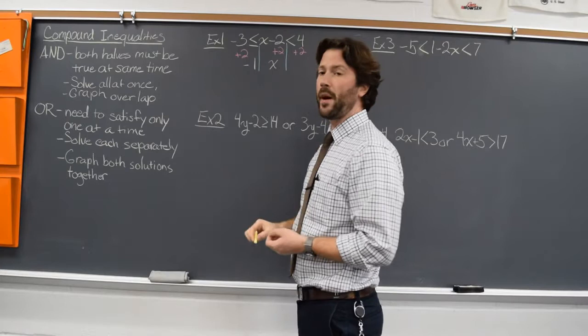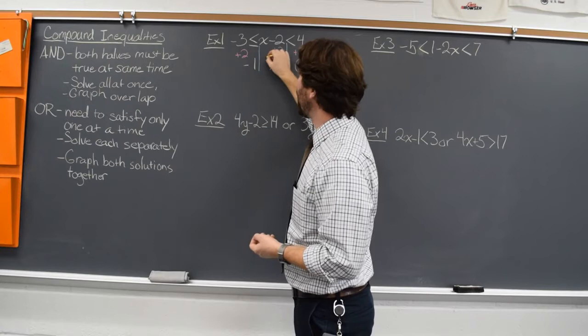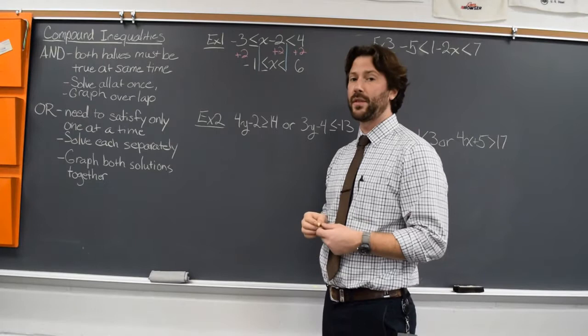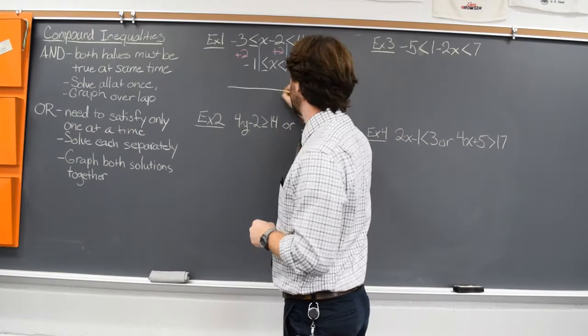On the left side, negative three plus two is negative one. On the right side, four plus two gives me six. So I have negative one is less than or equal to x, which is less than six. And there's our solution. So now what we're going to do is graph both halves of this inequality very lightly and darken where they overlap.